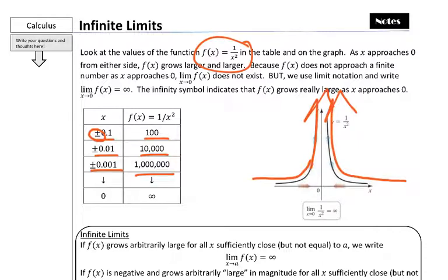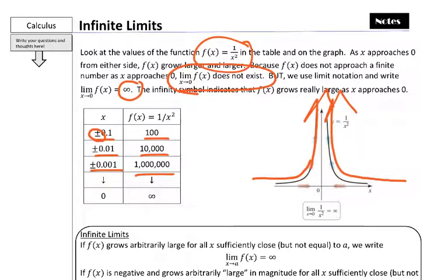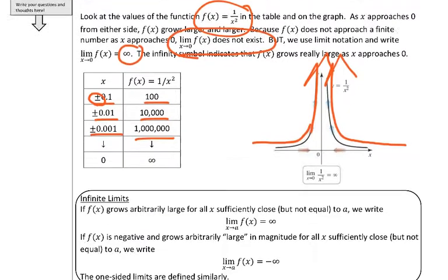It doesn't approach a finite number. Infinity is not an actual number. When we talked about continuity, if we showed that it went around a vertical asymptote and went to infinity, we said that the limit didn't exist. So in this case, the limit as x approaches 0 of f of x does not exist. But we use limit notation and write the infinity symbol because we want to know the behavior of the graph. When we say it equals infinity, we can picture what's happening to the behavior of this function. We're using it to gauge and understand what's happening to the y values.